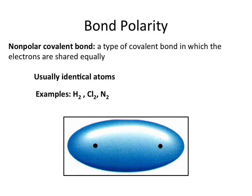Nonpolar covalent bonds are covalent bonds in which the electrons are shared 100% equally between the atoms. The electron density shared between the two atoms is shared evenly across the two atom centers. We usually see this with identical atoms — H2, Cl2, N2 — all those diatomics that form molecules are going to be sharing in a nonpolar covalent way. There are no dipoles, no partial positive or partial negative charge — it's a completely nonpolar bond.